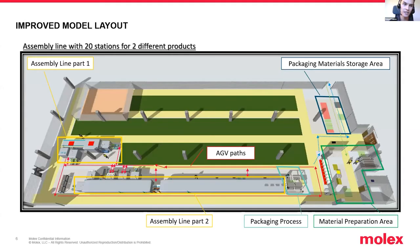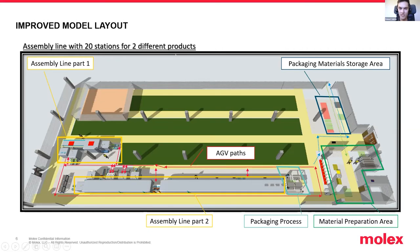Here you can see the new improved model layout compared to what I showed before. On the upper right corner, you can see the packaging material storage area - that's where operators are working and preparing packaging materials according to the product. The assembly line has 20 stations for two different products. At the moment we're running two products, but in the future the number of products may increase or some processes may change. On the lower right corner, you can see the material preparation area, where raw material is being prepared and transferred to the assembly line, shown in yellow.